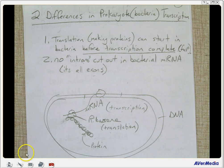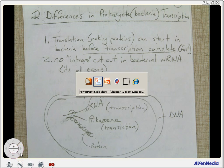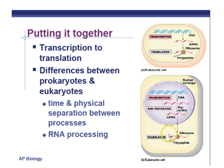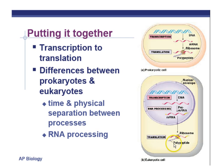We're done with transcription. We processed our RNA — cut out the introns, added a 5' cap and a poly-A tail. Now the finished messenger RNA is going to leave the nucleus and enter the cytoplasm. This is where translation occurs, at the ribosome in the cytoplasm, making our polypeptide protein from messenger RNA.